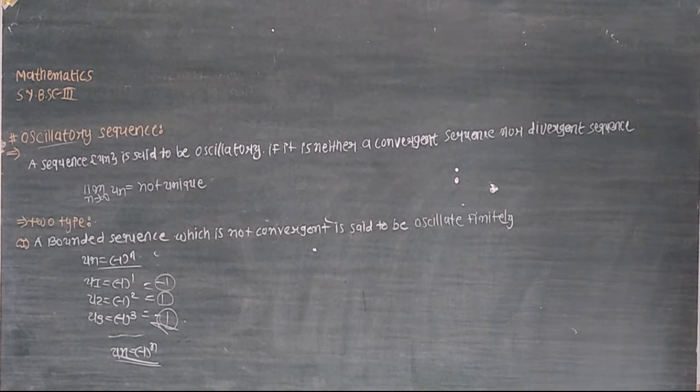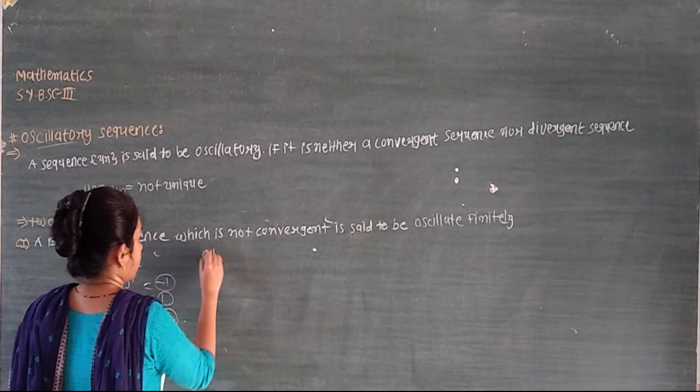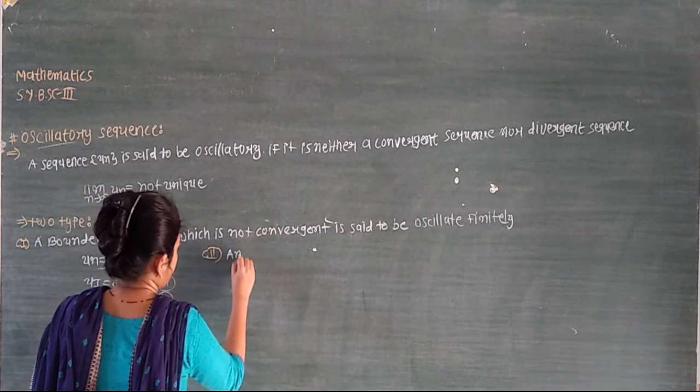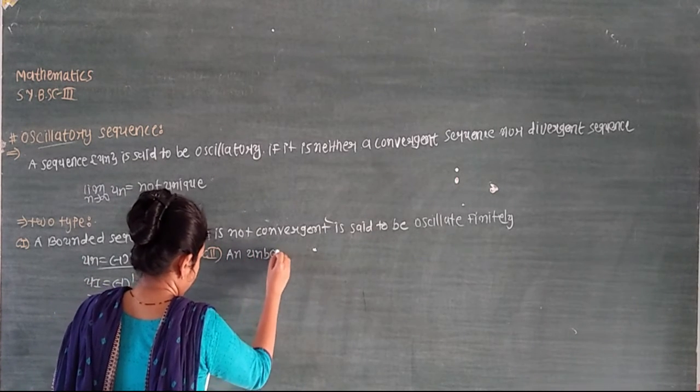The function minus 1 raised to n is an oscillatory finite sequence. What is this? They are bounded. However, we also have unbounded sequences.